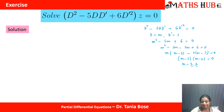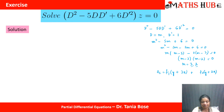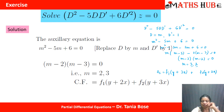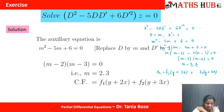The roots are 3 and 2, which are distinct. So the complementary solution is: z = f₁(y + 3x) + f₂(y + 2x). The orientation of the roots doesn't matter.